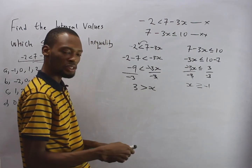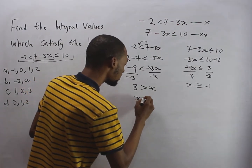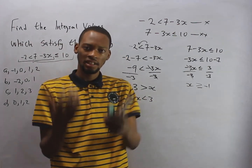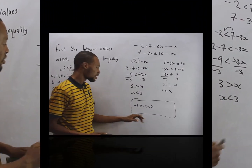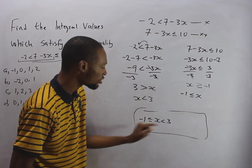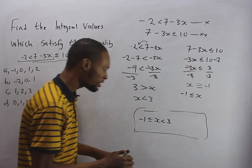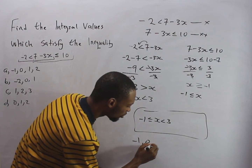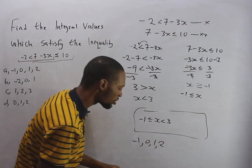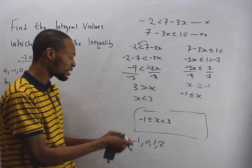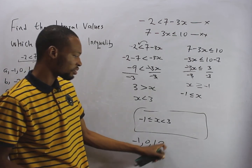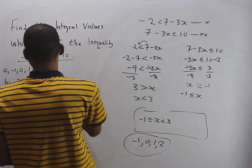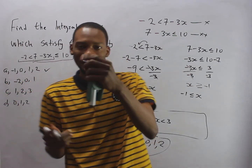We now have two results: three is greater than s means s is lesser than three, and s is greater than or equal to minus one. So s can be minus one, zero, one, and two — starting from minus one and ending at two because s is lesser than three. These are the integral values, so the correct option is option A.